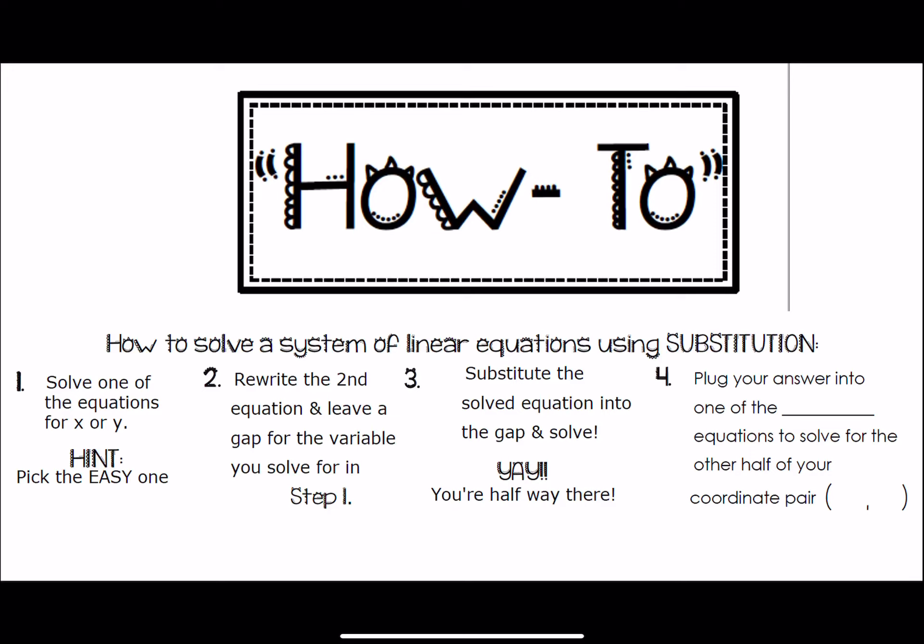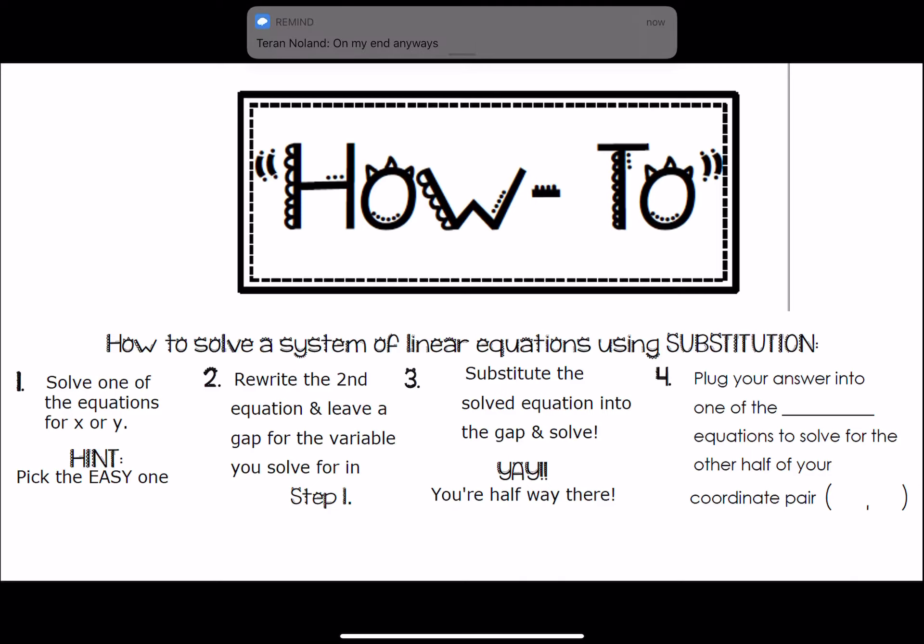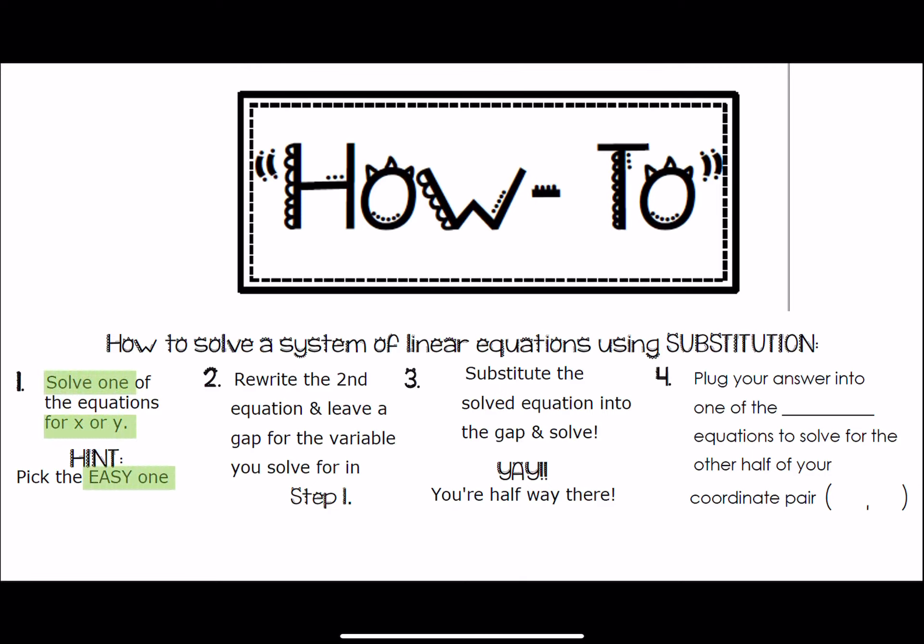How to solve a system of linear equations using substitution. Solve one of the equations for x or y, and pick the easy one. Then, rewrite the second equation, and leave a gap for the variable you're going to solve for in step one. Then, we're going to substitute the solved equation into the gap, and solve. And hey guys, you're halfway there, because that means you have one variable, or one coordinate point.